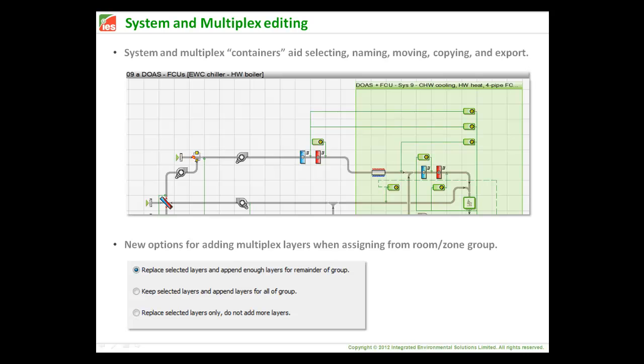Then in multiplexing, we now have a sort of a new bar at the top, and it puts a container around the prototype system, and same for the multiplex - there's sort of a green bar at the top and a green background, and that gives you a new way to access the multiplex region or the multiplex set of zones in the system. And there are some new options that come up when you add zones to a multiplex, just to give you some more flexibility and control over that.